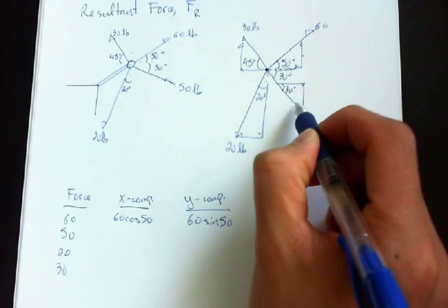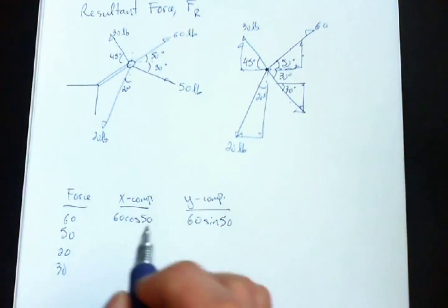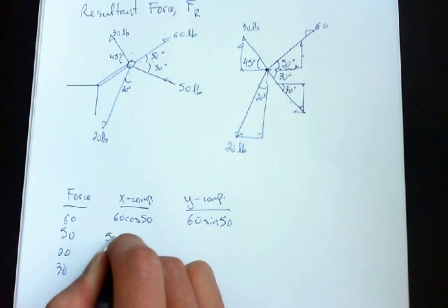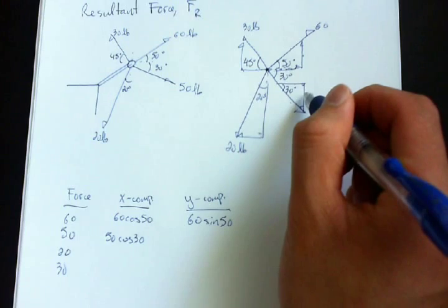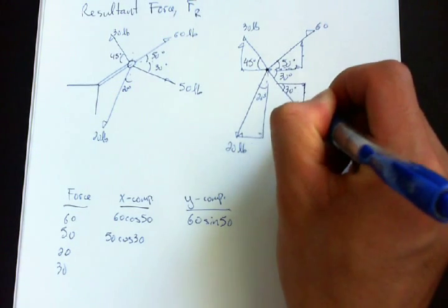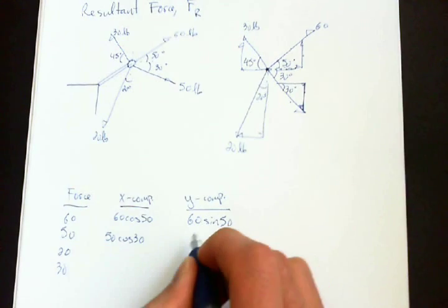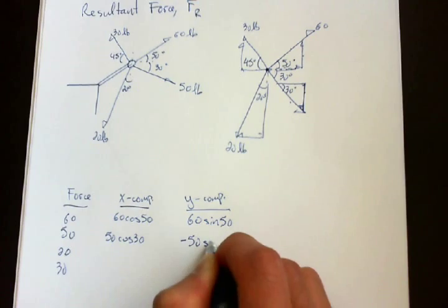For the 30-pound force, its x-component is adjacent over hypotenuse, so you use cosine. So 50 cosine 30. Its y-component is opposite over hypotenuse. Now this one is going down, so it's negative. So negative 50 sine 30.